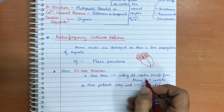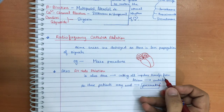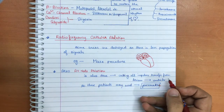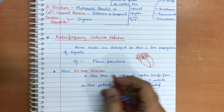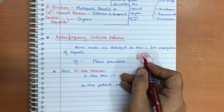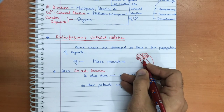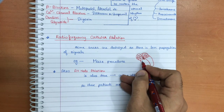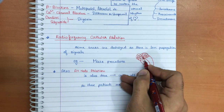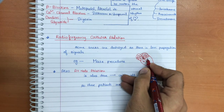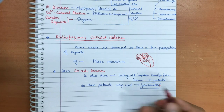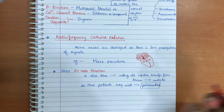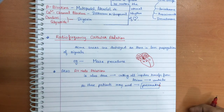Another option is AV node ablation, which cuts all impulses transferring from the atria to the ventricles, blocking them completely. In these patients, a pacemaker must then be implanted to maintain ventricular rhythm. That covers the full discussion of atrial fibrillation.